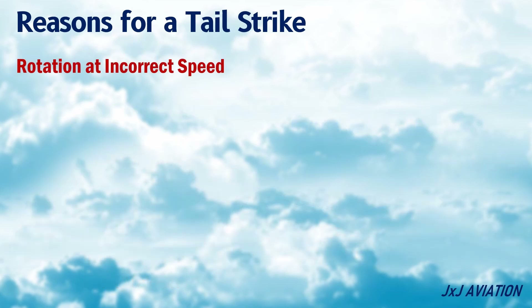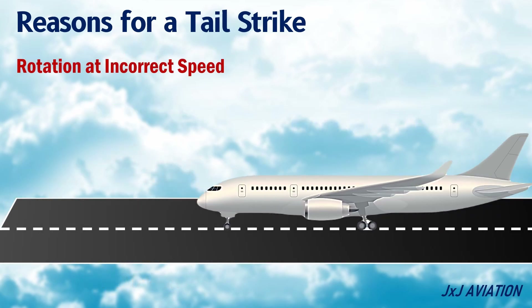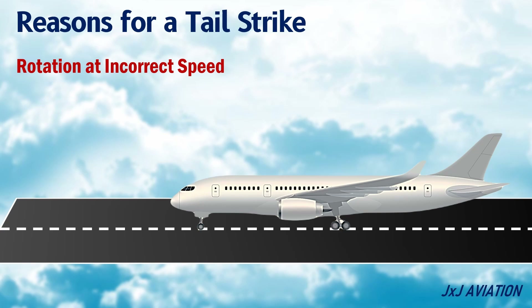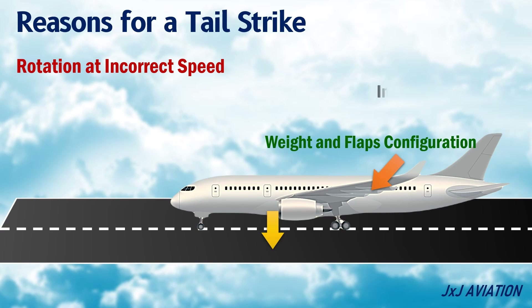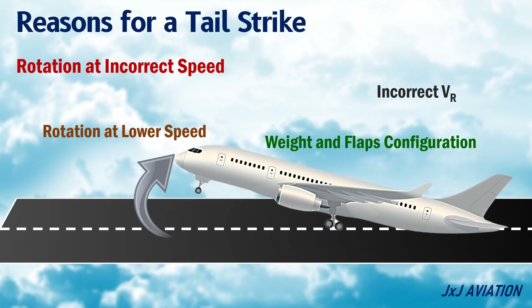Rotation at incorrect speed: the rotation speed, or VR, is calculated based on weight and flaps configuration of the aircraft. If the VR is not calculated correctly, the rotation may be performed at a lower speed, which can lead to a tail strike, because the speed is not sufficient for the aircraft to lift off.